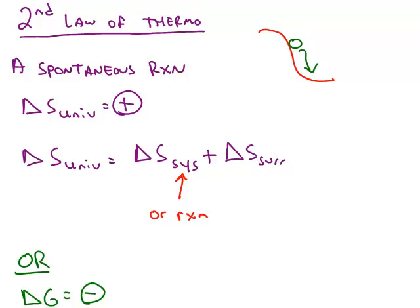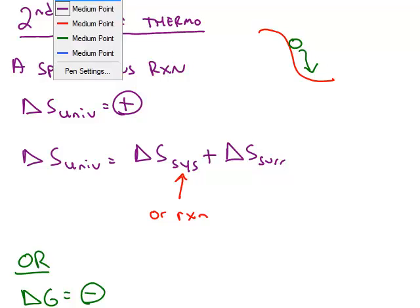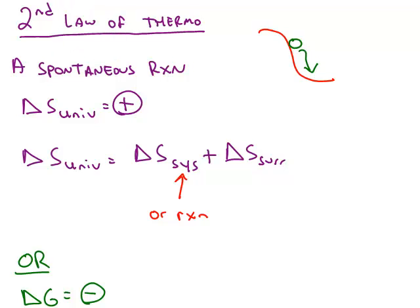One of the main goals of thermodynamics is trying to figure out when a reaction will be spontaneous or when it won't be spontaneous. This is the second law of thermodynamics. A spontaneous reaction is like a ball held in the middle of a hill. If you let go of the ball, there's a spontaneous direction down that gravity will pull on the ball, and the ball rolls downhill spontaneously. It never rolls uphill spontaneously.